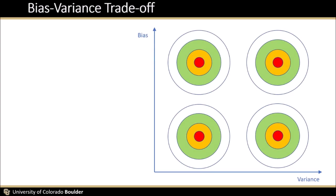The behavior of test error that goes down first and goes up later as we increase the model flexibility can be explained by bias-variance trade-off.